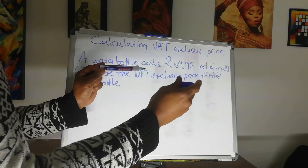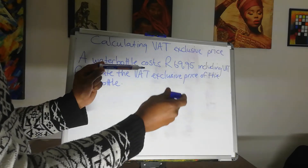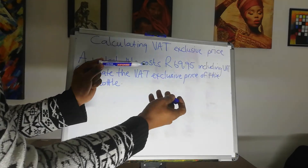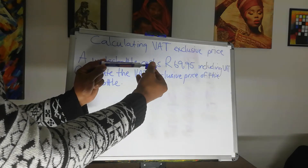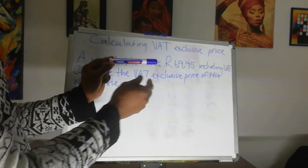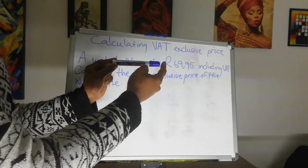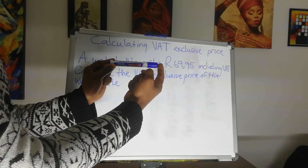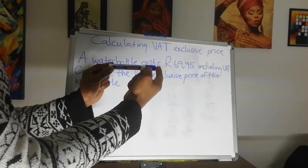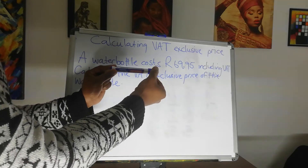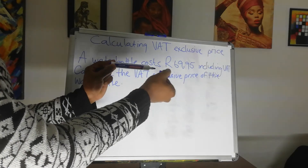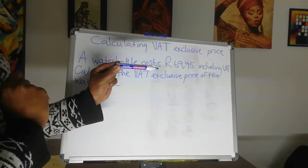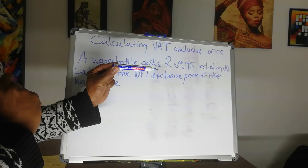This means this is our original price, or the VAT exclusive price. The cap represents our VAT. So when we put them together, we have the VAT inclusive length, or price if you talk about money. When we take it away, we get the VAT exclusive price.